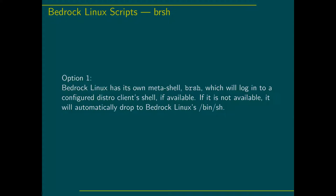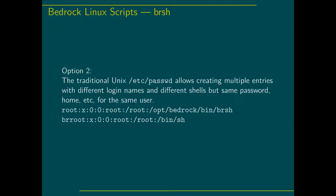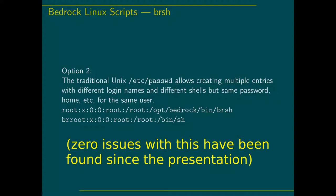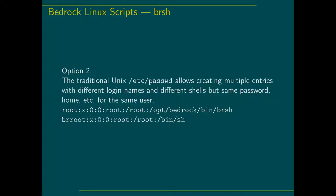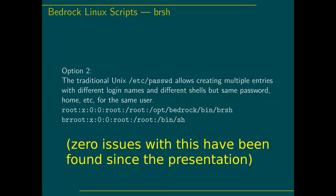I came up with two fixes. First, I created a meta-shell called BRSH — it runs whatever shell you expect if available, otherwise falls back gracefully. So if the client breaks and ZSH isn't available, it falls back nicely. The second idea: Unix systems detect what shell you want from /etc/passwd using your user number, not your username. You can create two entries with different login names but the same user number — one that runs BRSH and one that goes directly to the Bourne shell for debugging.